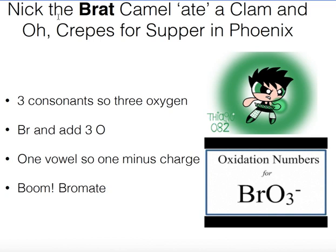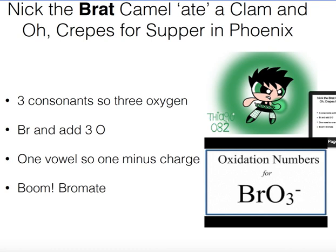Now focusing on 'Brat': BR gives us the element bromine. Counting the consonants in 'brat' — B, R, T — there are three consonants, so we add three oxygens: BrO3. Brat has one vowel, so a minus one charge. That gives you bromate. All of these will end in 'ate,' and whatever the beginning element is, you just change the ending to 'ate.'